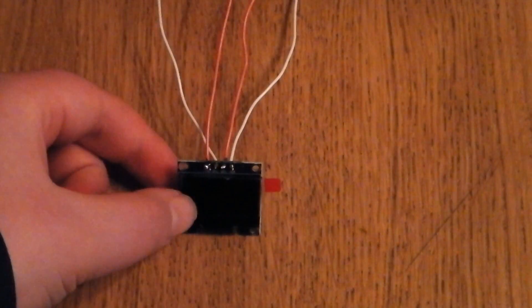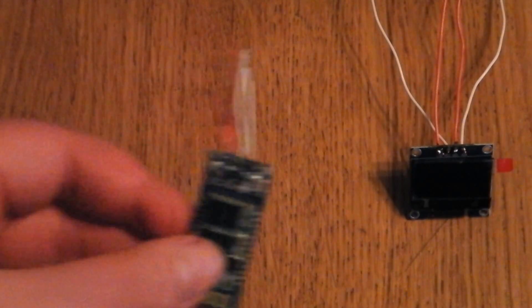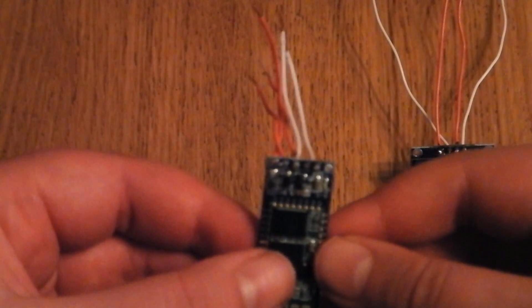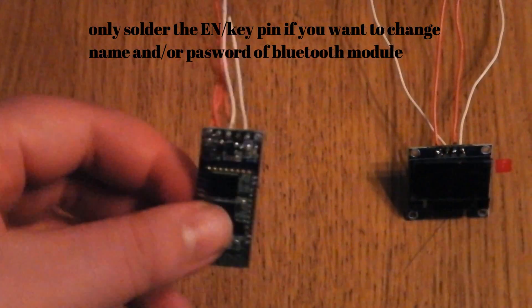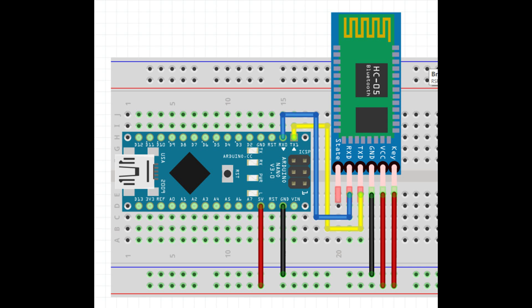As you can see I am just soldering on the pins of the OLED display and Bluetooth module. Connect the Bluetooth module as shown.